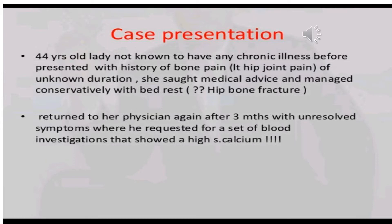We will have a case presentation. A 44-year-old lady, not known to have any chronic illness, presented with a history of bone pain in the hip joint of unknown duration. She sought medical advice and was managed conservatively with bed rest, and returned to her physician after 3 months with unresolved symptoms. A set of blood investigations showed a high serum calcium level. What could be the differential diagnosis for elevated serum calcium, and what is the diagnosis for our case?